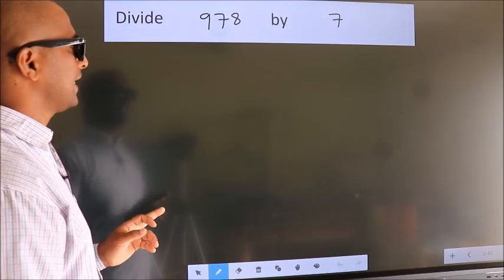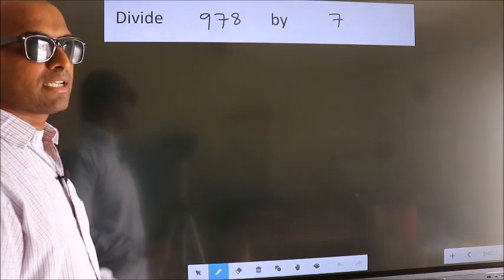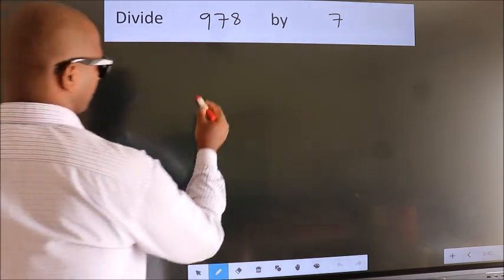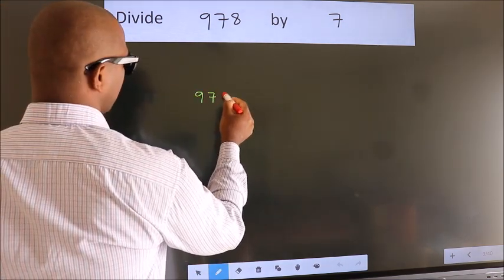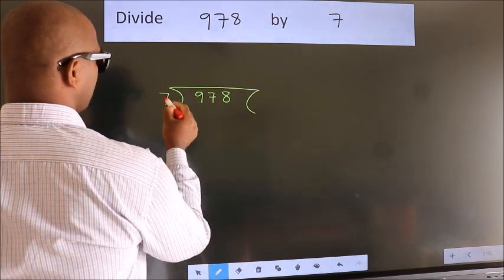Divide 978 by 7. To do this division, we should frame it in this way. 978 here. 7 here.